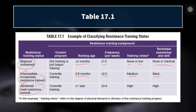Advanced trainees have over a year of training. They can handle up to three to four times per week of resistance training — and remember, these are athletes who also have other sport practice on top of that. They can handle higher training stress, and to be classified as advanced we will have observed a high degree of experience and technique.